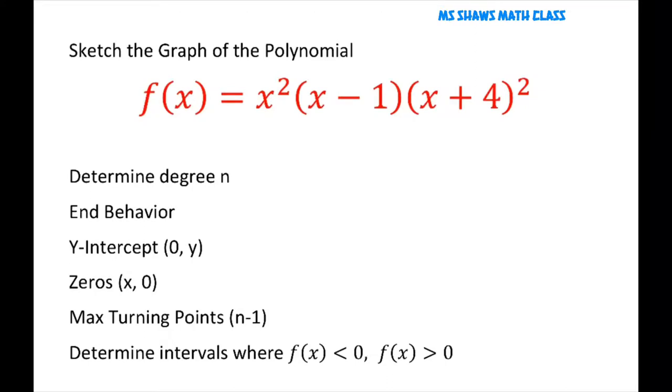First thing we're going to do is determine the degree. Since this is not in standard form, we can just add up our multiplicities here. This is 2, 1, and 2. That equals 5. So our n equals 5. That's an odd number. And also our lead coefficient here is positive. And we'll talk about this in just a minute.